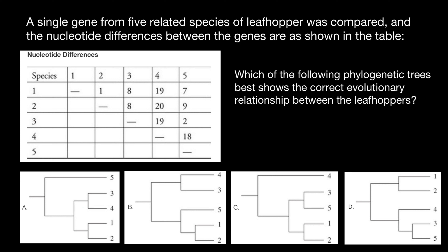What we can see in this table are nucleotide differences in the same gene between five species compared against each other. When we compare species one and one, or species two and two, they're going to be zero difference. That explains why we have nothing in the diagonal line. Numbers below the diagonal would just be repetitions — for example, comparing species one and two gives the same number as comparing species two and one — so to avoid clutter, we don't use those cells.